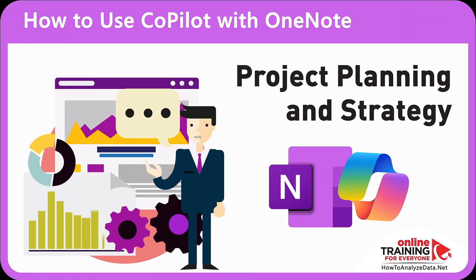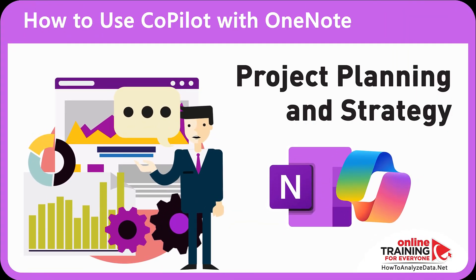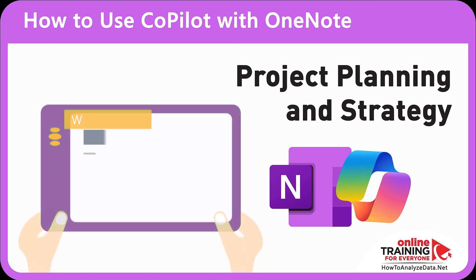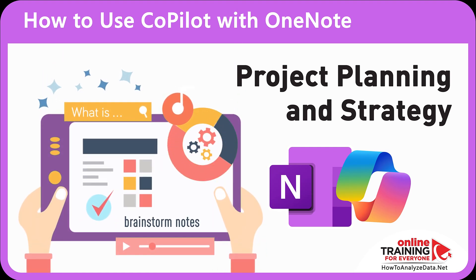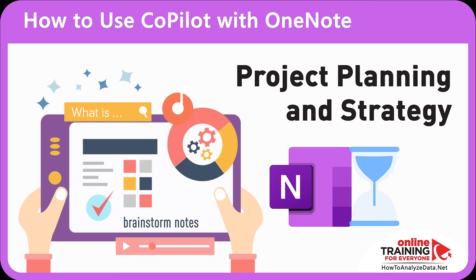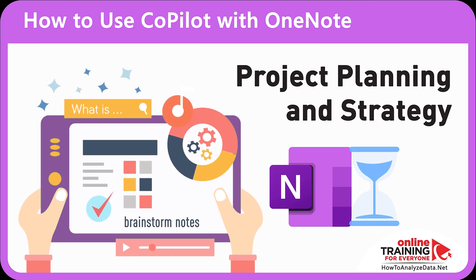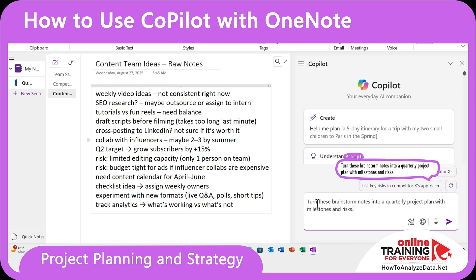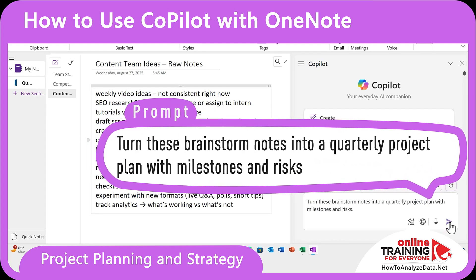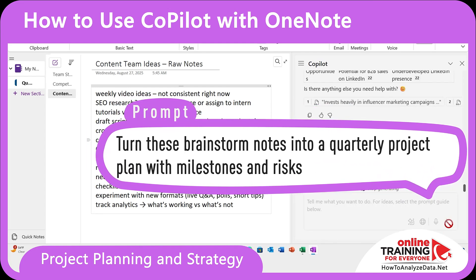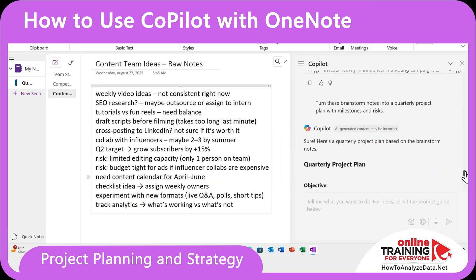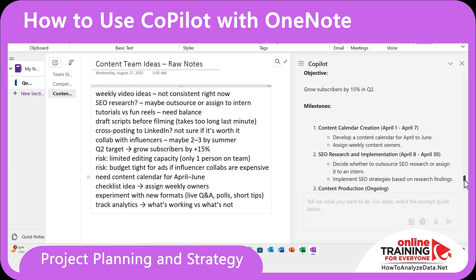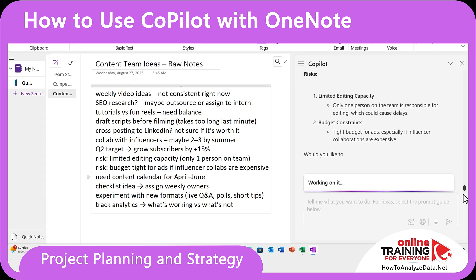You can also use Copilot in OneNote for project planning and strategies. Professionals often brainstorm in OneNote, but loose bullets don't equal strategy. Without Copilot, you would spend hours turning them into a roadmap. With Copilot, you can just say: Turn this brainstorm into a quarterly project plan with milestones and risks. Suddenly, your rough page becomes an actionable strategy.